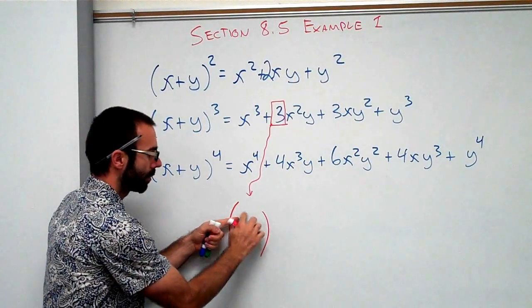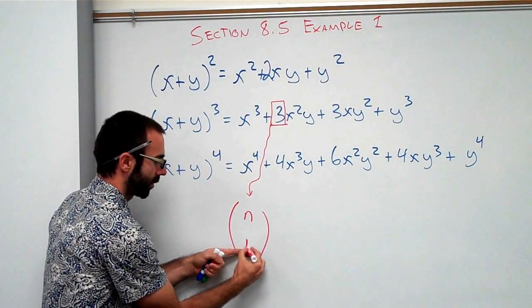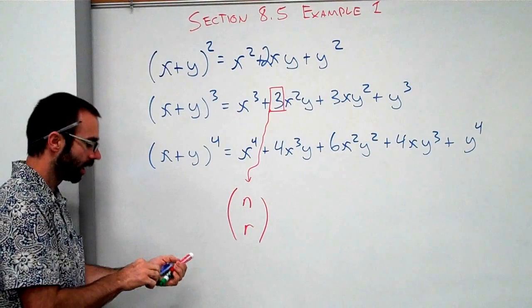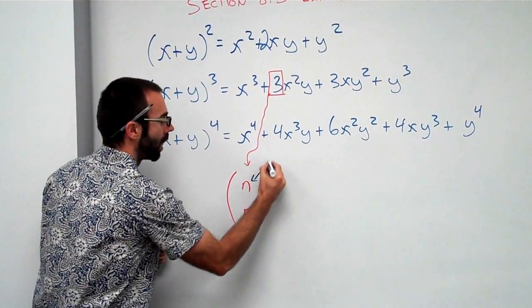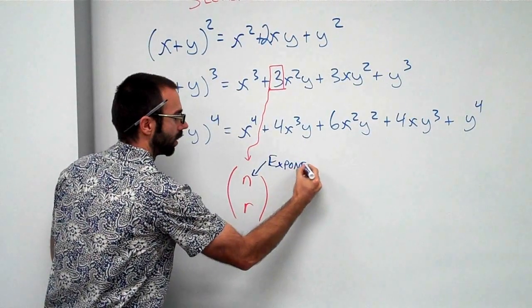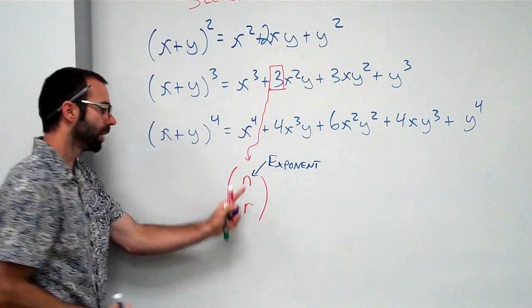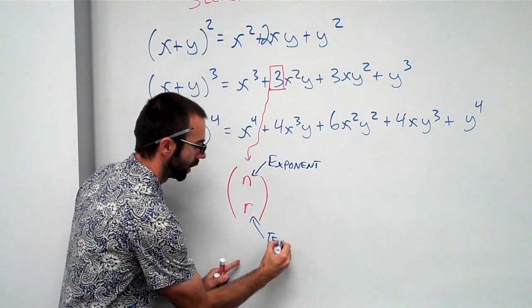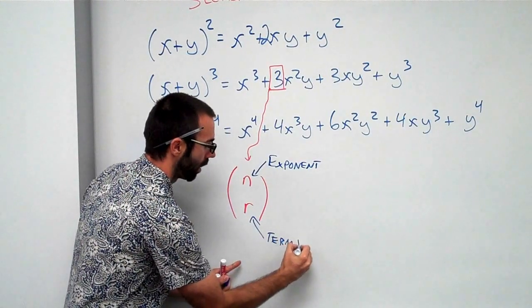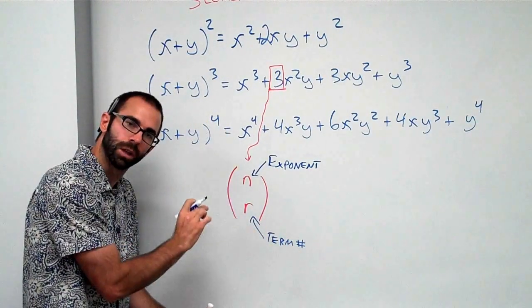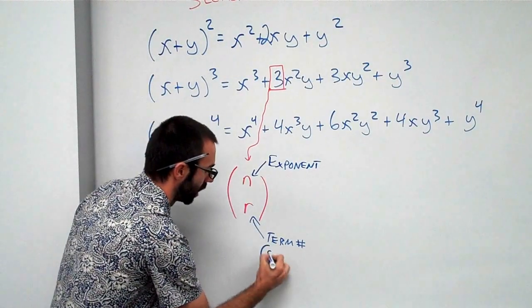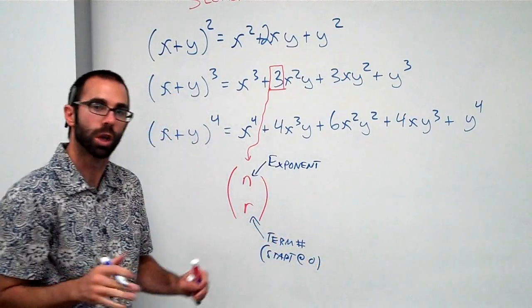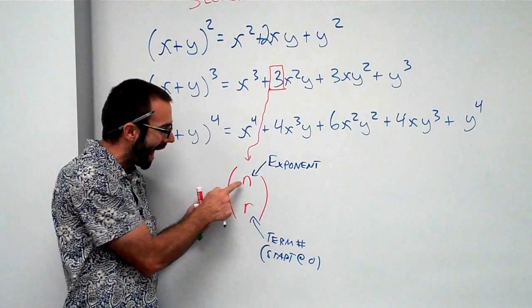The number that is going to be on top is going to be n and the bottom is going to be r. Now let me go through what r and n mean. The n is always your exponent, and our r is our term number. However, I'm just going to make a little side note: it starts at zero. It starts at zero. You'll find out right now why. The way that you say this is you say n choose r.